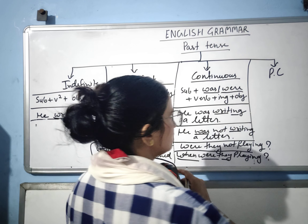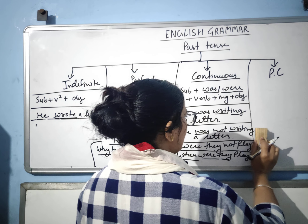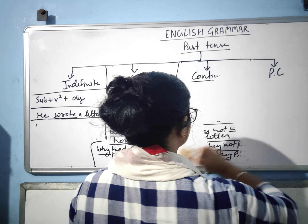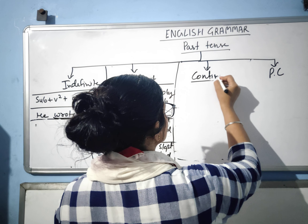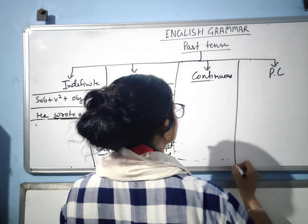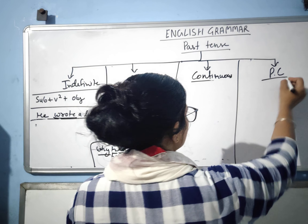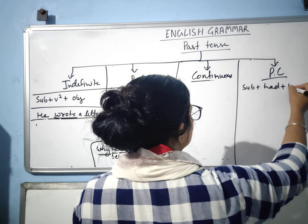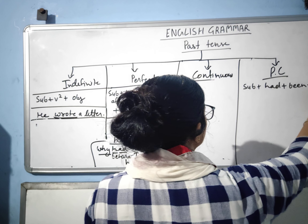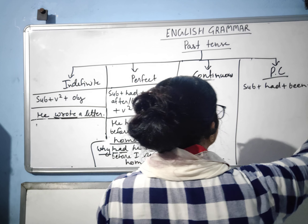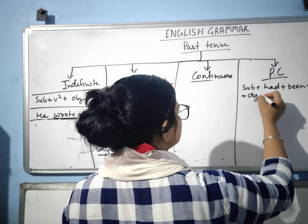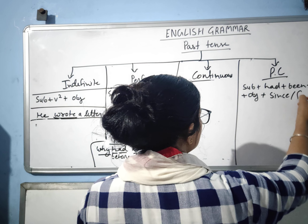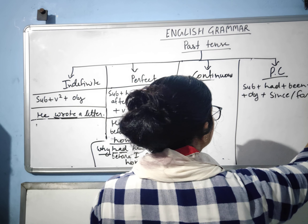Now let us go to past perfect continuous. The structure of past perfect continuous is: subject plus 'had' plus 'been' plus verb plus ing plus object, plus 'since' or 'for', and then the time.